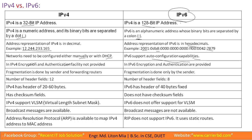In IPv6, encryption and other security integrations are available, whereas IPv4 does not have these natively. Regarding fragmentation: in IPv4, fragmentation is done by both the sender and forwarding routers. But in IPv6, fragmentation is done only by the sender — forwarding routers do not perform fragmentation.